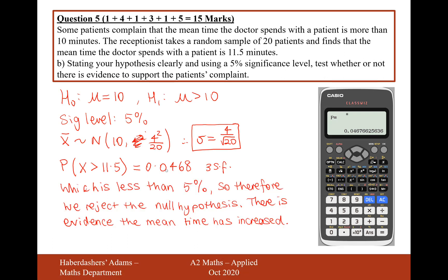So here's our conclusion. The 0.0468 value is less than 5%, so therefore we reject the null hypothesis. There is evidence that the mean time has increased. We test our probability against 5%, and if it's less than 5%, then that's so unlikely it's probably due to the mean increasing rather than anything else. Therefore, we have evidence to support that the mean time has increased.